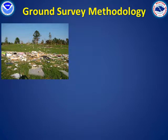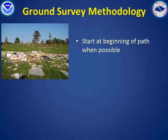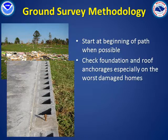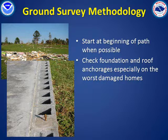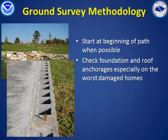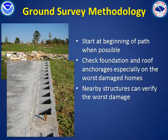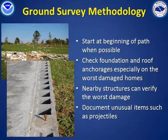When conducting a ground survey, the team will start at the beginning of the damage path if possible. Most of the time will be spent closely examining the most severely damaged structures. We will investigate the connections — how well the roof was anchored to the walls, and how well the walls were anchored to the floor. In this example, notice the single bolt which connected the base of the wall to the foundation. Investigation of nearby structures can support the wind speed estimates associated with the worst damage. Unusual items, such as projectiles, can also provide evidence into the severity of the winds.